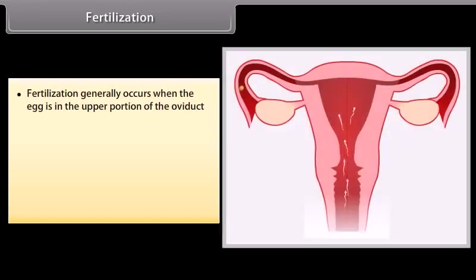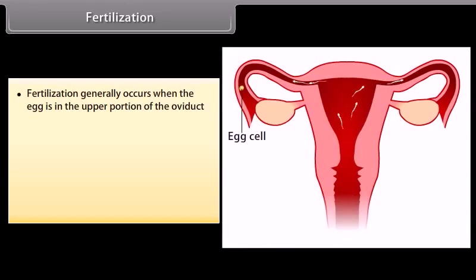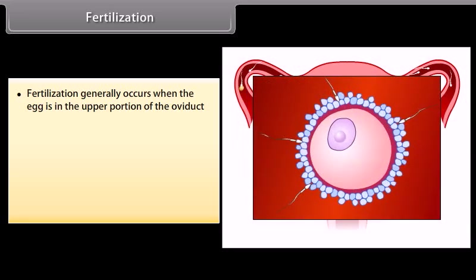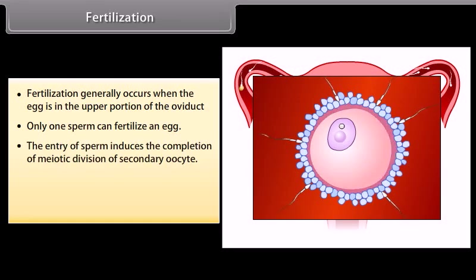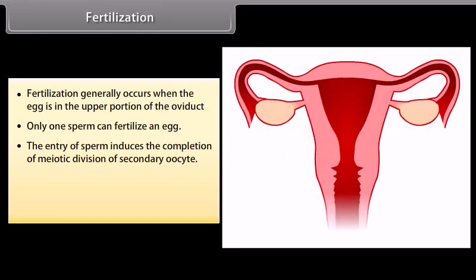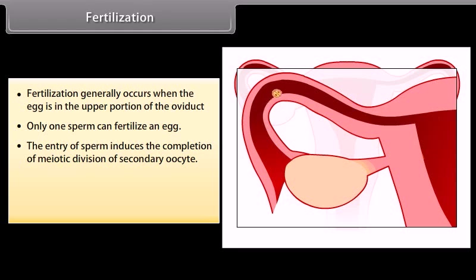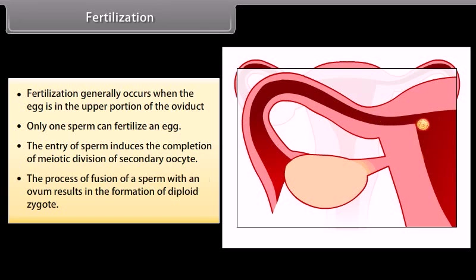Fertilization generally occurs when the egg is in the upper portion of the oviduct. Only one sperm can fertilize an egg. The entry of sperm induces the completion of the meiotic division of the secondary oocyte. The process of fusion of a sperm with an ovum results in the formation of a diploid zygote.